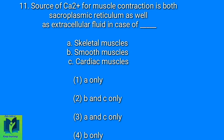The source of calcium ion for muscle contraction is both sarcoplasmic reticulum as well as extracellular fluid in case of dash. Option 1: A only. Option 2: B and C only. Option 3: A and C only. Option 4: B only. Answer: Option 4.